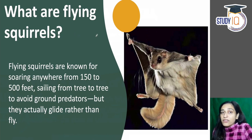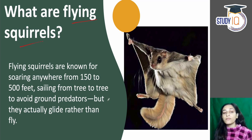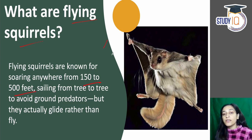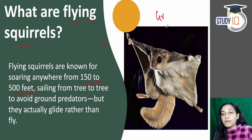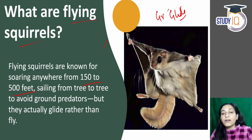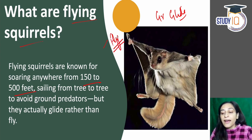Now the question is — everyone has seen it, but what are flying squirrels? They are known for springing anywhere from 150 to 500 feet from one tree to another. They are ground predators with the adaptability to glide. Flying squirrels don't actually fly — they have a gliding capacity.